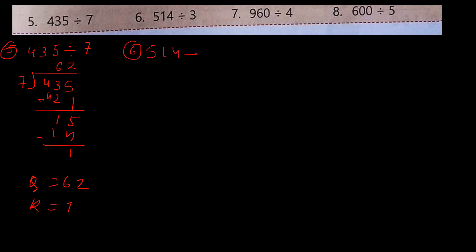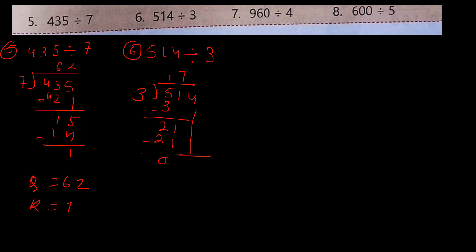Number 6: 514 divided by 3. 3×1=3, minus 0. Bring down 1 making 21. 3×7=21, here 0. Bring down 4. 3×1=3, 4 minus 3 is 1. So Q is equal to 171, R is equal to 1.